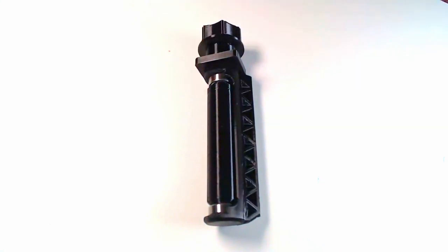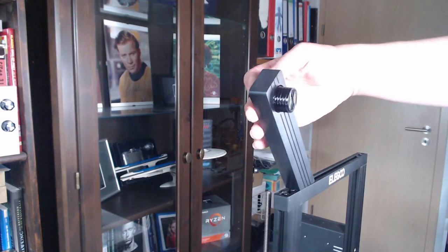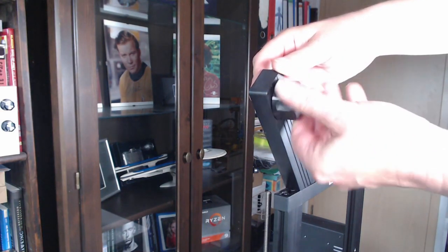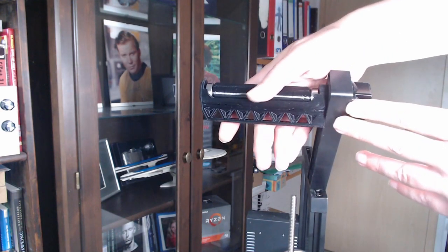To solve the spool holder problem, I printed this one which I found on Thingiverse. Unmount the old spool holder, put the bolt into the opening and fasten it with a nut, and finally slide the spool holder in place.